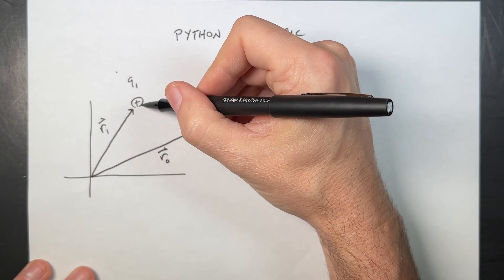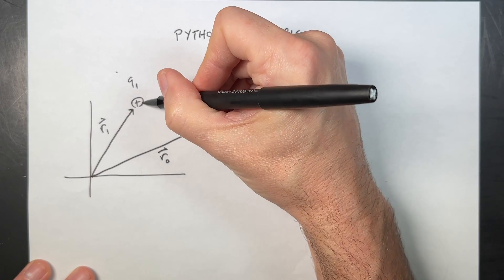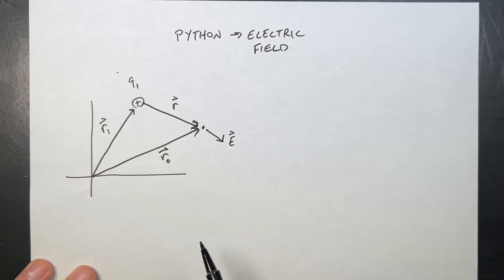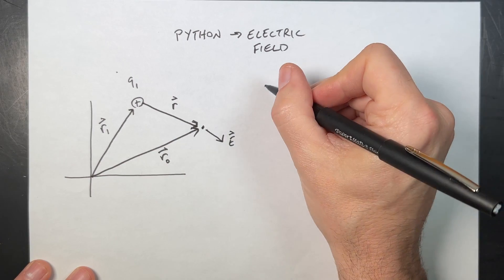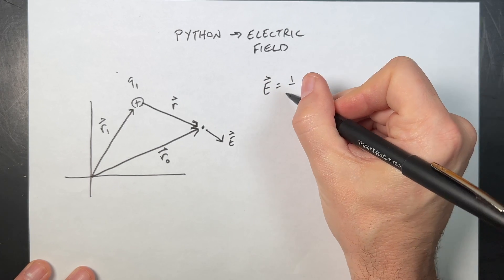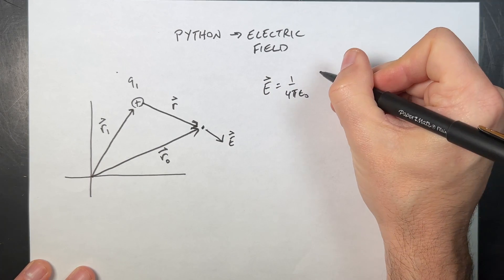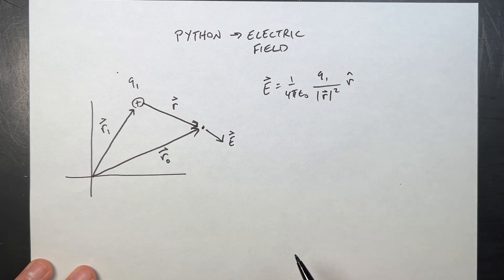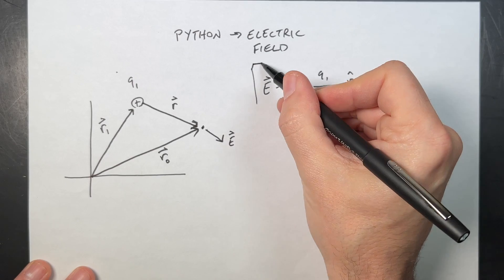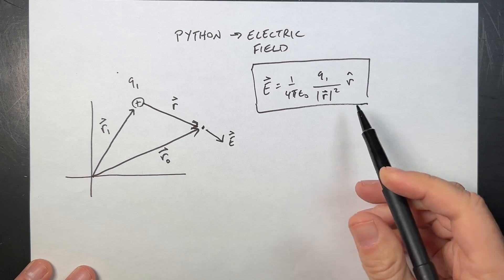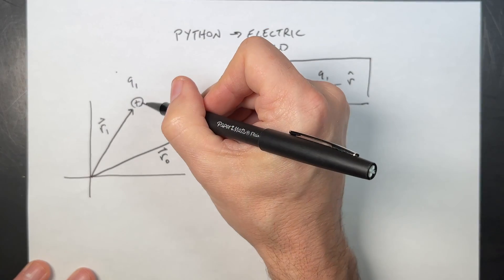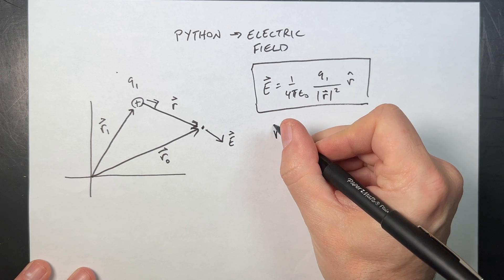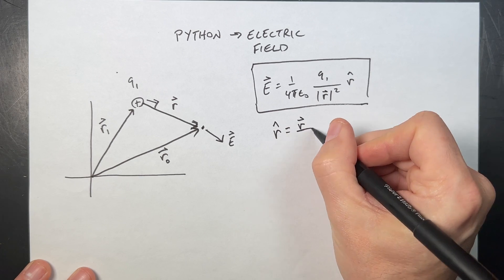The first thing I need to do is find this vector from the charge to the observation point — I'll call that R. If I know R, then I can find the electric field: E equals 1 over 4π epsilon-naught, times Q1 over the magnitude of R squared, times R-hat. R-hat is a unit vector pointing in the direction of R. To find the unit vector, R-hat equals the vector R divided by the magnitude of R.